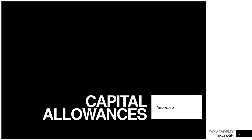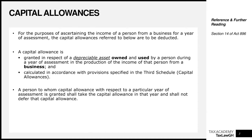What does the law tell us about capital allowances? We'll look at this from the perspective of the Income Tax Act of 2015, Act 896, and from the perspective of the Income Tax Regulations of 2016, LI 2244. Capital allowances are provided for the purposes of ascertaining the income of a person from a business. You cannot get capital allowances for employment income or investment income.